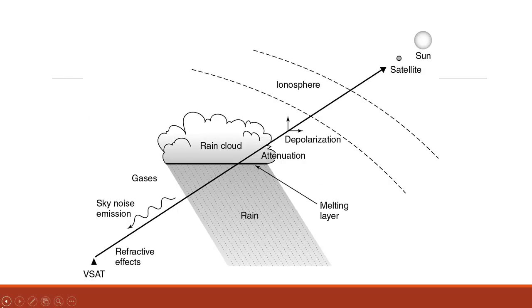As a signal travels from a VSAT — Very Small Aperture Terminal — earth station to the satellite, the distance is quite long, especially for a geostationary satellite. Many factors attenuate, depolarize, and affect the signal link. These include: the sun itself, which is a source of radiation troubling satellite signals; the ionosphere, which depolarizes the traveling wave; rain and clouds, which attenuate and depolarize; melting layers, ice, hail, and sleet, which absorb and attenuate signals; and gases, sky noise, and refractive effects.